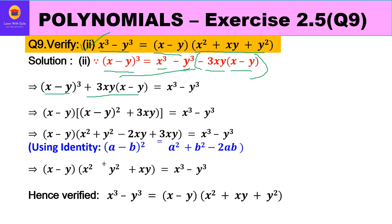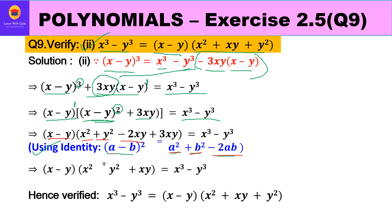We take (x minus y) raised to power 1 outside. Out of power 3, power 2 remains, so (x minus y) whole square is left inside the bracket along with plus 3xy, and x cube minus y cube remains on the right hand side. We expand x minus y whole square using a minus b whole square equals a square plus b square minus 2ab, giving x square plus y square minus 2xy, plus 3xy.